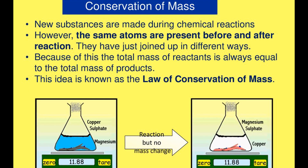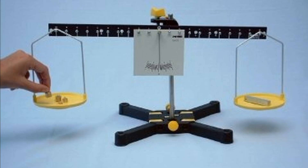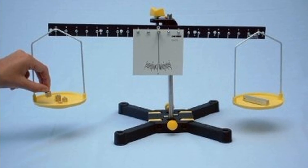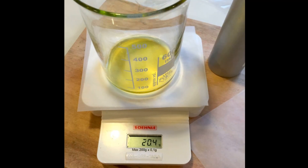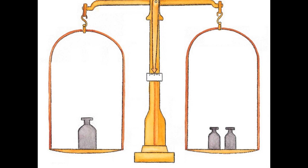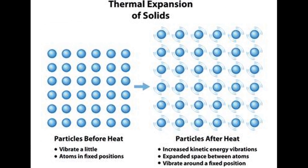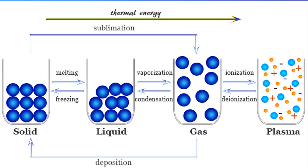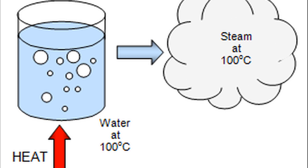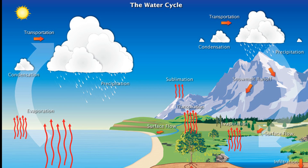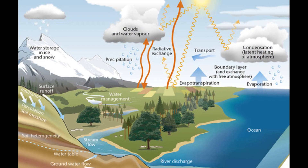Number three, there is no change in mass during a physical change. Weigh a beaker containing some solid wax on a beam balance, then melt the wax and again weigh the beaker — you will find that the two weights are identical. Number four, there is usually no gain or loss of energy as a result of physical change. Water changes into steam by absorbing a certain amount of heat energy, and the same amount of energy is given out when steam changes back into water. Therefore, there is no net gain or loss of energy as a result of physical change.